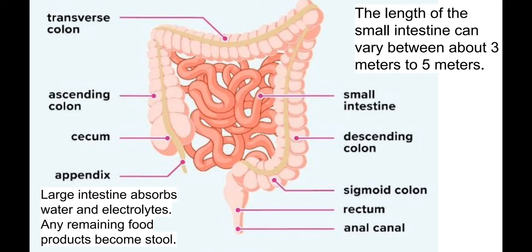Please note the names: the small intestine has a small diameter but can be up to 5 meters in length. The colon, or large intestine, is large in diameter but relatively short. The large intestine functions to absorb water and electrolytes and is also full of bacteria. Anything that is not digested goes outside through the rectum and anal canal.